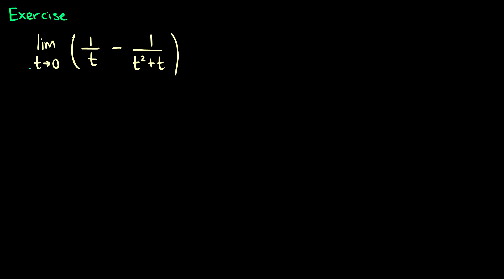Here I have the limit as t goes to 0 of 1 over t minus 1 over t squared plus t. We can't just plug in 0 because then we're left with 1 over 0 in both cases. So here's another method you might have forgotten: let's factor some things first and see if we can find a common denominator.